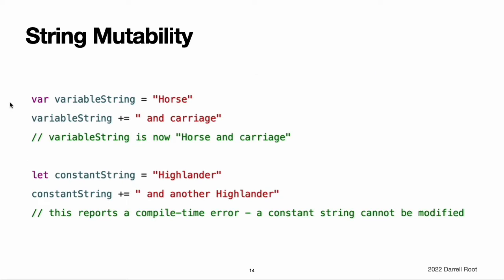String mutability. You indicate whether a particular string can be modified or mutated by assigning it to a variable, in which case it can be modified, or to a constant, in which case it cannot be modified. Note: this approach is different from string mutation in Objective-C and Cocoa, where you choose between two classes, NSString and NSMutableString, to indicate whether a string can be mutated.